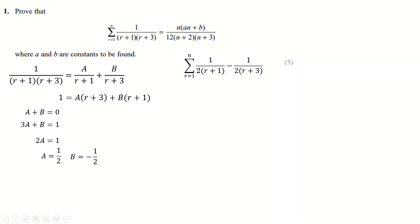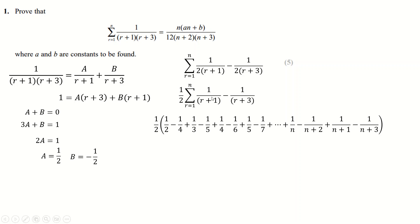We end up with a is a half and b is minus a half, so we change this to this. Now we can just put in numbers. If you put in say the number one, you get one over two times two, which is one over four. I took out the half first, then you get one over two minus one over four. The next term will be one over three minus one over five, then one over four minus one over six, and so on. This is r equals one, r equals two, r equals three, r equals four, all the way up to r equals n minus one and r equals n.